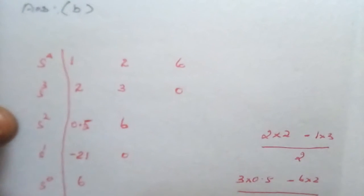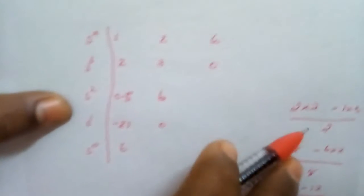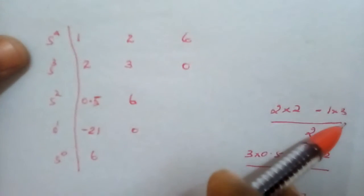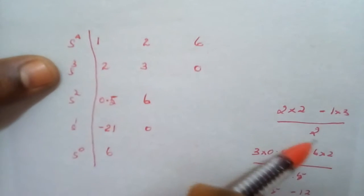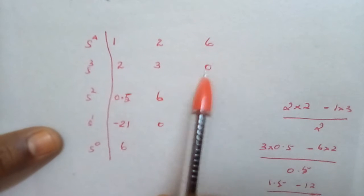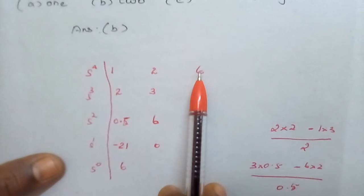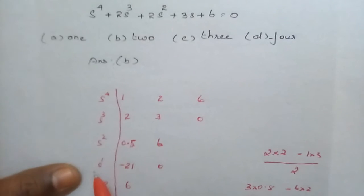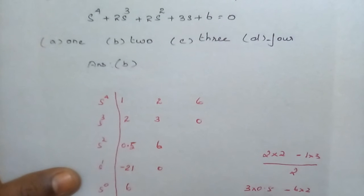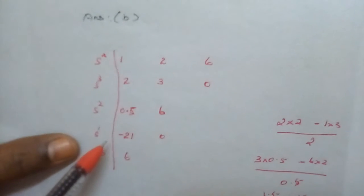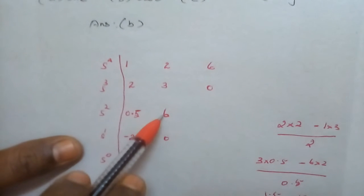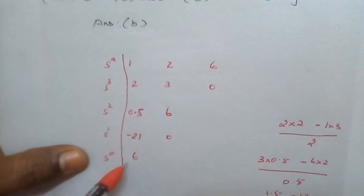For the S² row, I cross-multiplied: (2×2 − 1×3) divided by 2, obtaining 0.5. For the next column, since the S³ third term is 0, I simply carry down the upper value of 6. For the S¹ row, I cross-multiplied: (0.5×3 − 6×2) divided by 0.5, obtaining −21. The next term is 0. Since that term is 0, the S⁰ value is taken as the upper value: 6.